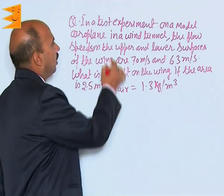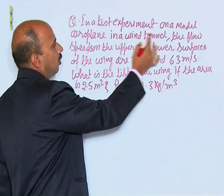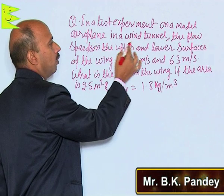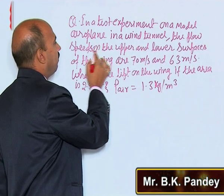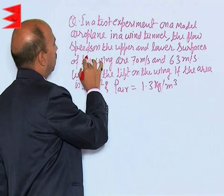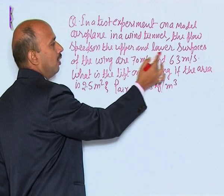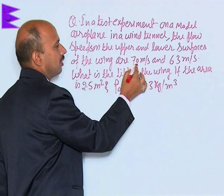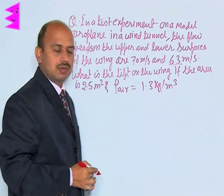Now, see in this example, in a test experiment on a model aeroplane in a wind tunnel, the flow speeds on the upper and lower surfaces of the wing are 70 meter per second and 63 meter per second.